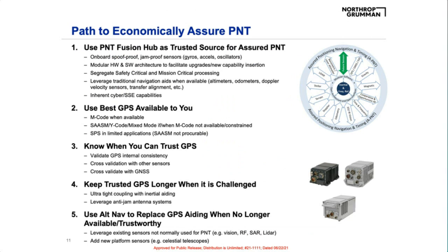The challenge of assured PNT isn't creating the technology — the challenge is doing it affordably. We have to think about not only the cost of creating the new technology, but also the cost of installing it on thousands of platforms. It must leverage our existing infrastructure while supporting the agile insertion of new technology as it matures. First: build a PNT fusion engine. We have to invest in modular architectures that can act as fusion engines, with access to onboard gyros and accelerometers, but also oscillators or clocks for short-term GPS-independent time sources.